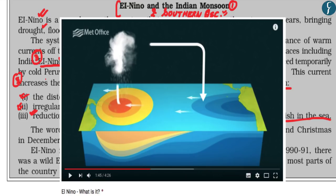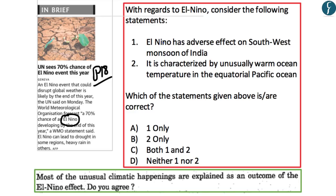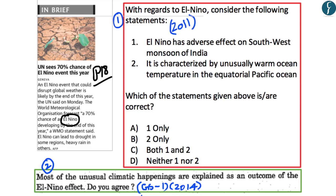A link to a YouTube video with a graphic explanation of the El Niño effect will be provided. For practice questions: the first is an objective-type question from the 2011 prelims examination, and the second is a subjective question from the 2014 mains examination. You can try answering both using the NCERT explanations provided, and leave the correct answer to the objective question in the comment section below.